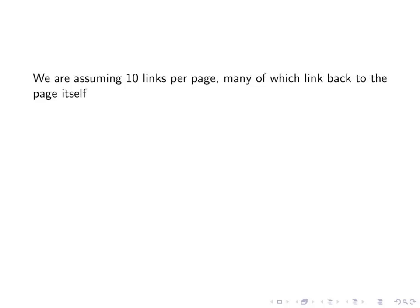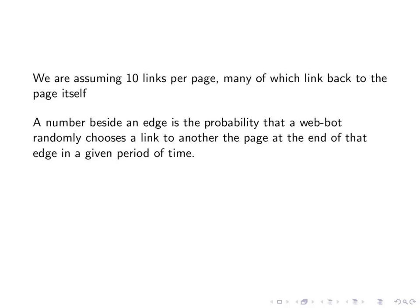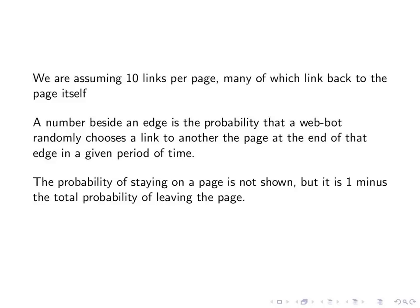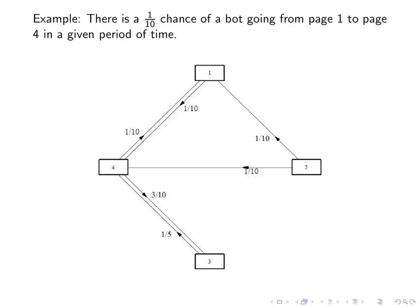We're going to assume ten links per page, many of which point back to the page itself. A number beside an edge will be the probability that a web bot randomly chooses a link to that other page in some given period of time. We won't write down the probability of staying on a page, but that's just one minus the total probability. For example, look at this edge that goes from one to four. Notice that this means there is a one in ten chance during a certain transition period of a bot randomly choosing to go to page four from page one. What this means is that there are ten links here, and only one of them goes to page four.